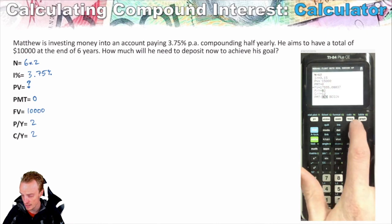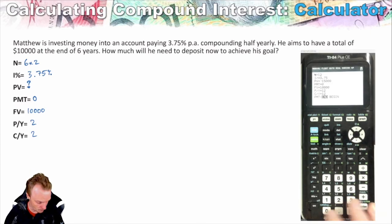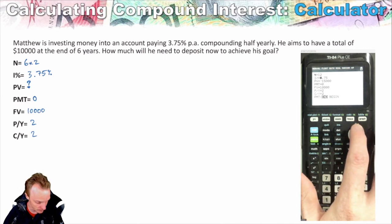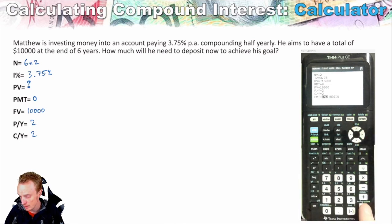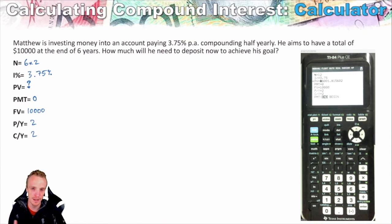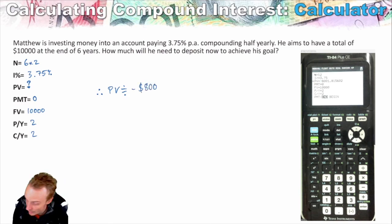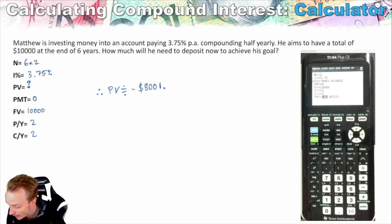So in the calculator we enter: N = 6 × 2; interest rate = 3.75%; we skip the present value since that's what we're finding; PMT = 0; future value = positive $10,000; P/Y = 2, and that'll set C/Y automatically. The biggest thing when using the calculator is making sure you get your negatives correct for your present value and future value. The calculator gives us the present value as approximately negative $8,001.82.